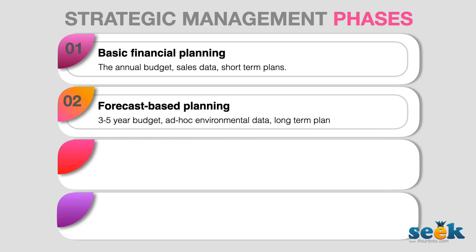The second phase is called forecast-based planning. Here managers keep the short-term plan aside and start forecasting for the next three to five years. Available environmental data are also considered at this stage. In big organizations, different subsidiaries or departments often compete with each other to put all budgets together to have a common consensus.